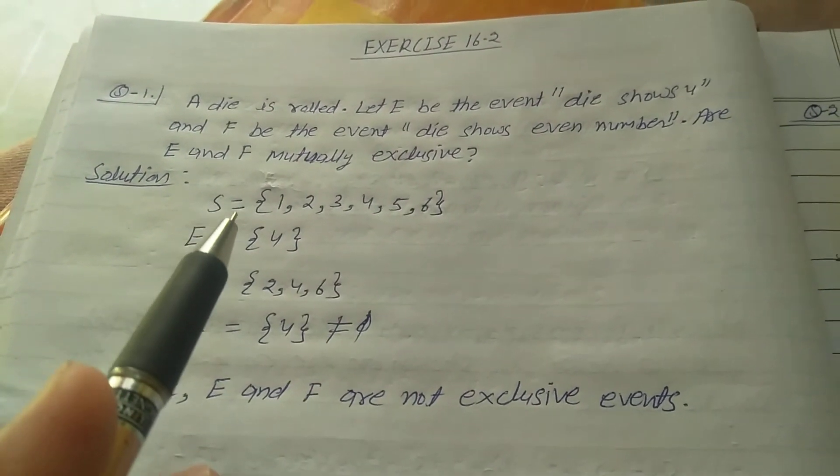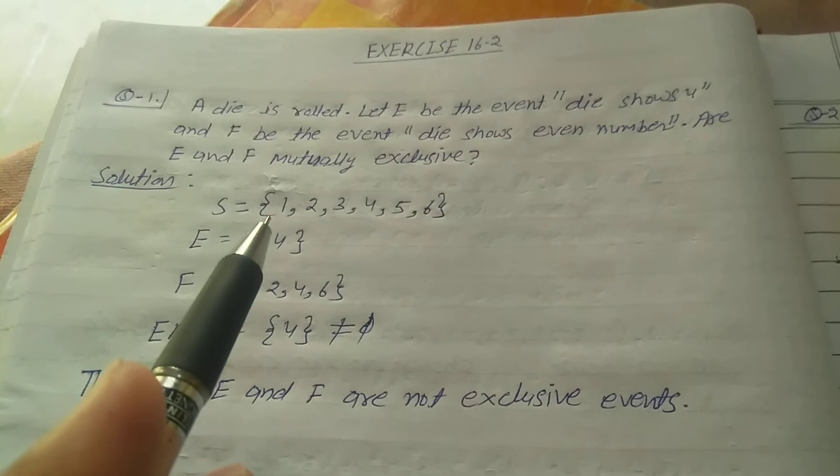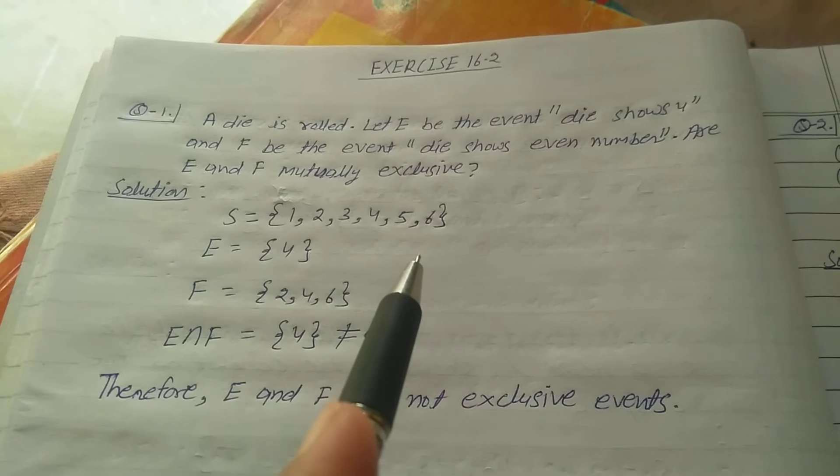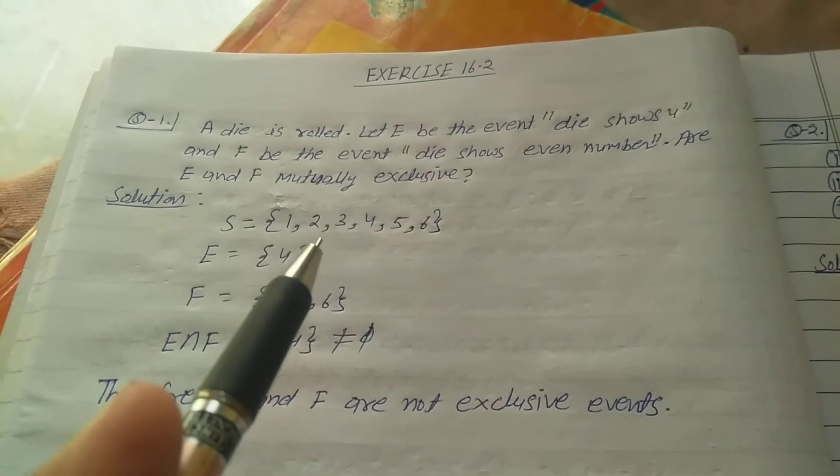Solution. Sample space S equals {1, 2, 3, 4, 5, 6} because one die is rolled.